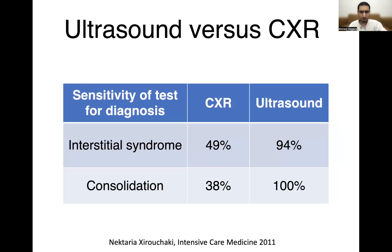How good is ultrasound in assessing consolidation? Ultrasound is actually superior to X-ray in detecting consolidation. If you do a thorough ultrasound of all the lung regions and zones, ultrasound is 100% sensitive in detecting consolidation, whereas X-rays are only 38% sensitive. Interstitial syndrome — diffuse B-line patterns — are also better detected with ultrasound: 94% sensitive compared to chest X-rays, which are only 49% sensitive. When looking at a diffuse B-line pattern, for example in somebody with pulmonary edema, ultrasound is a more superior test than X-ray.